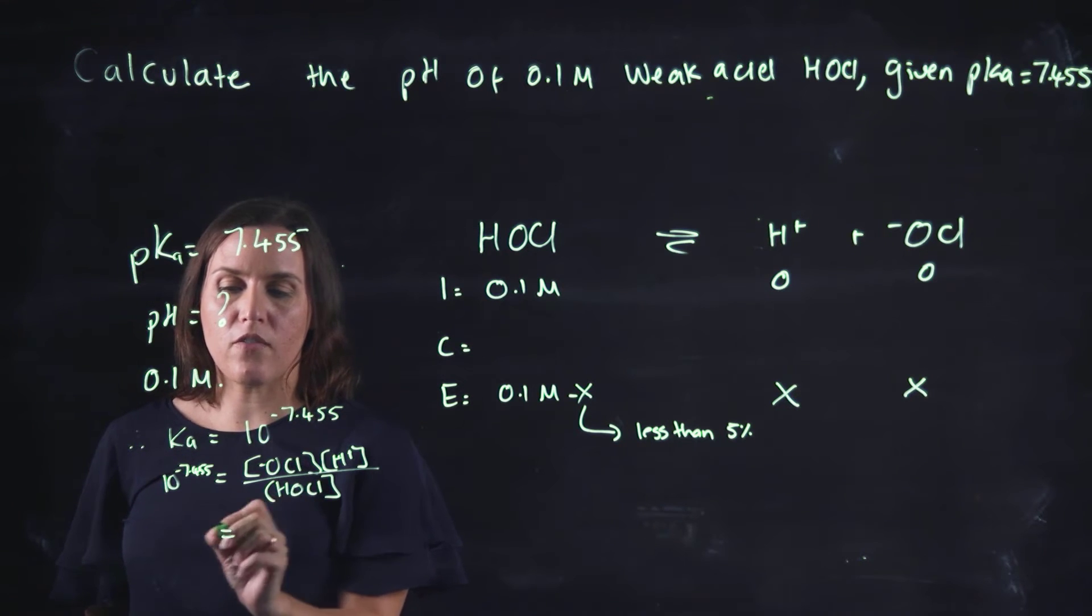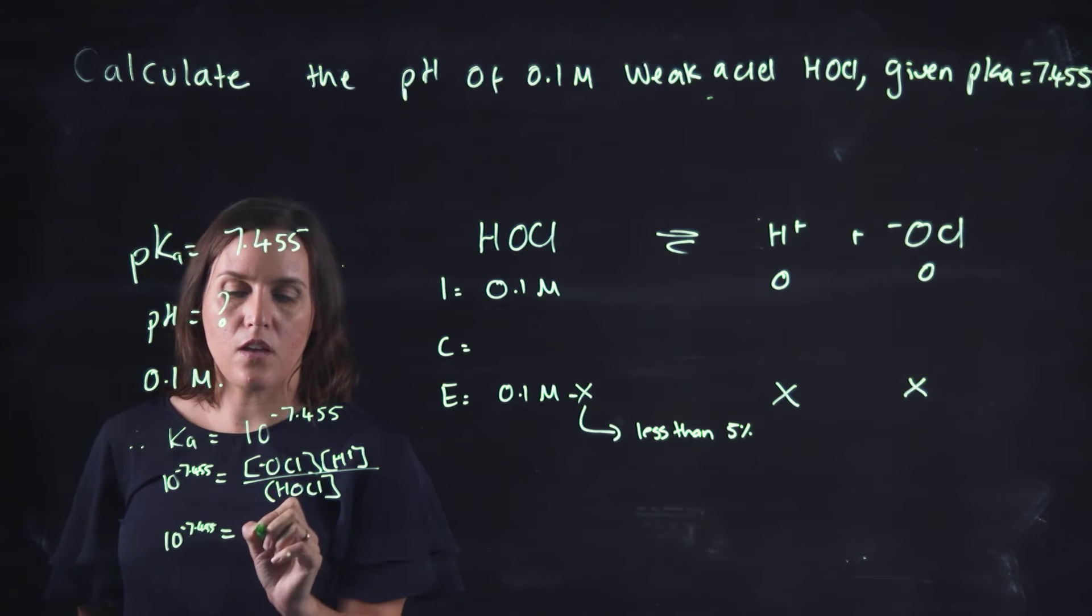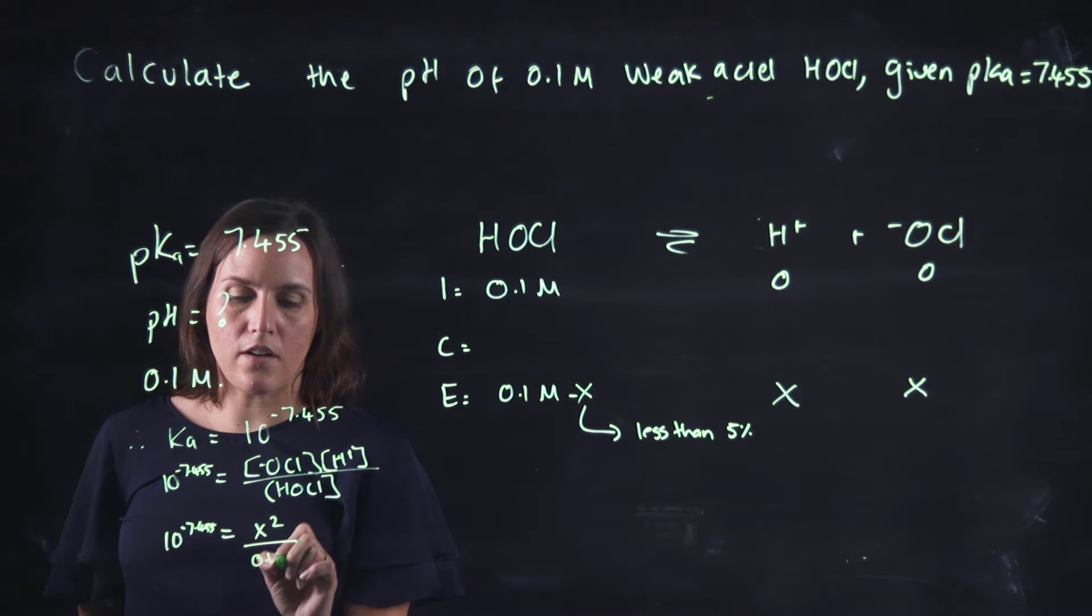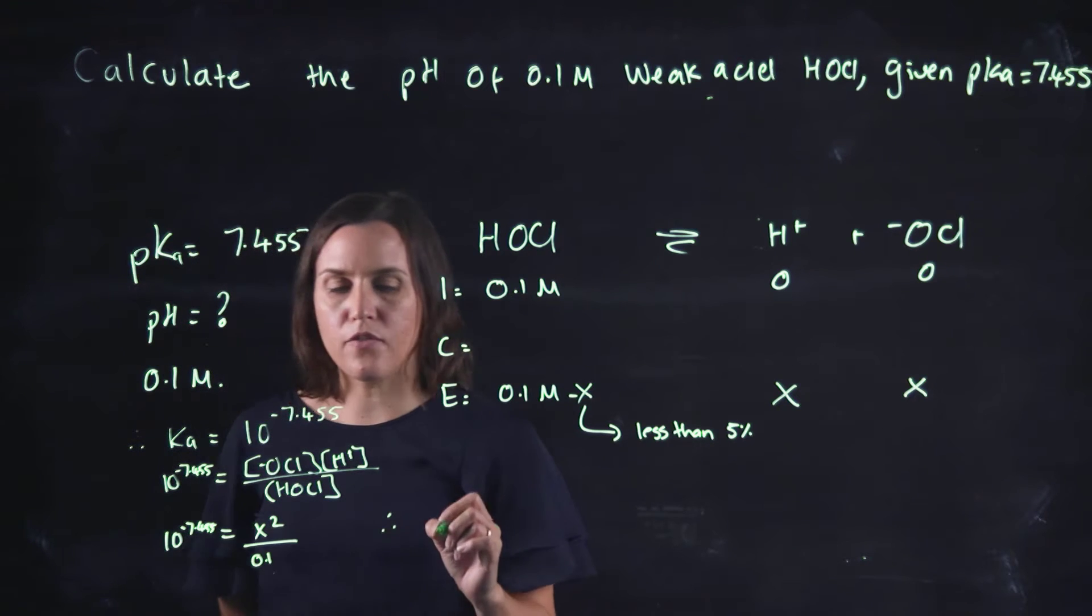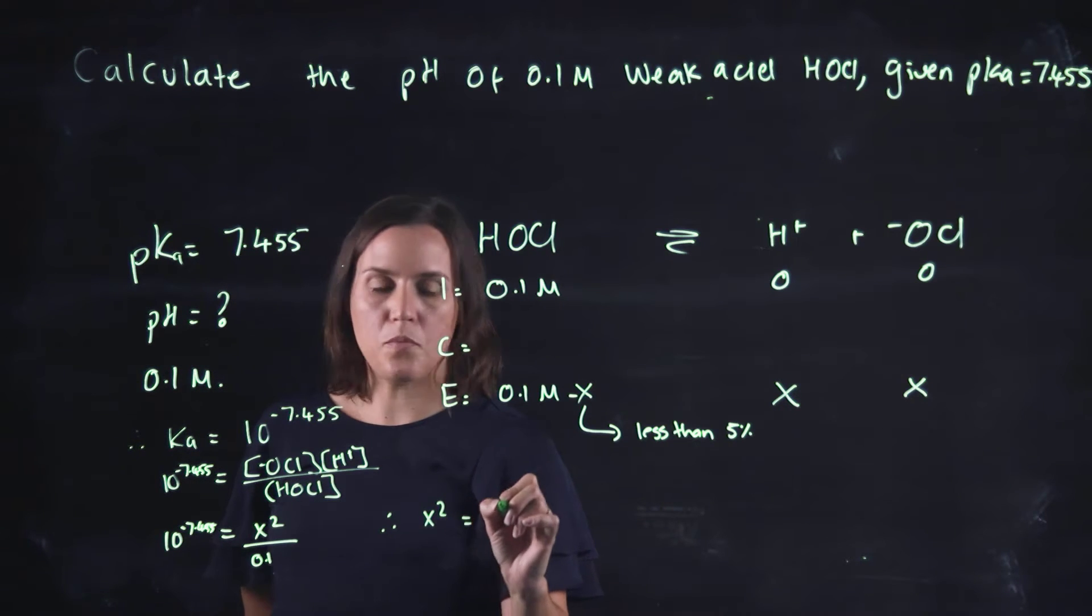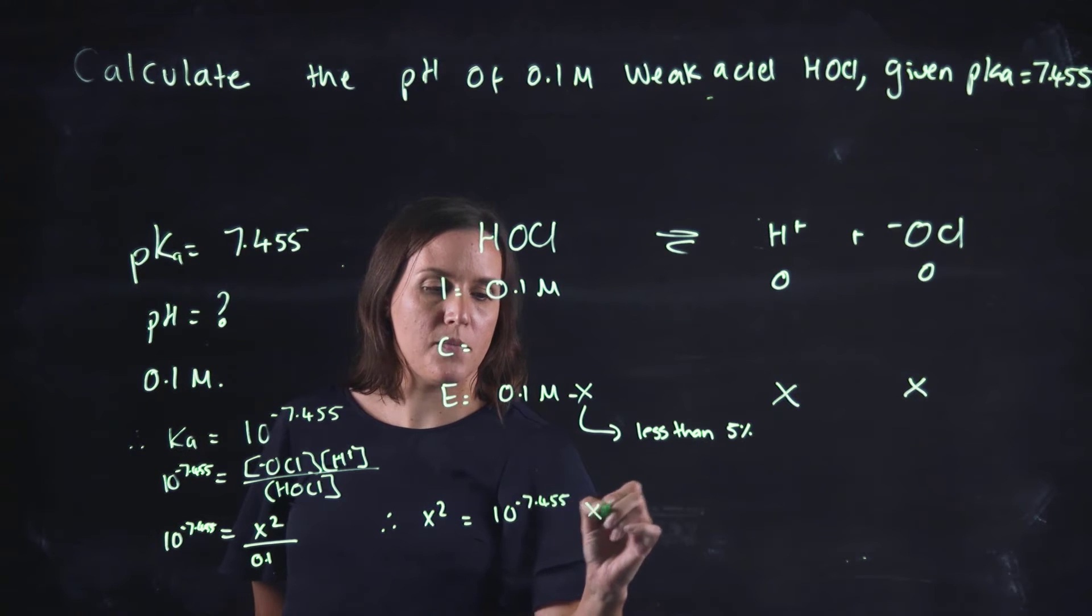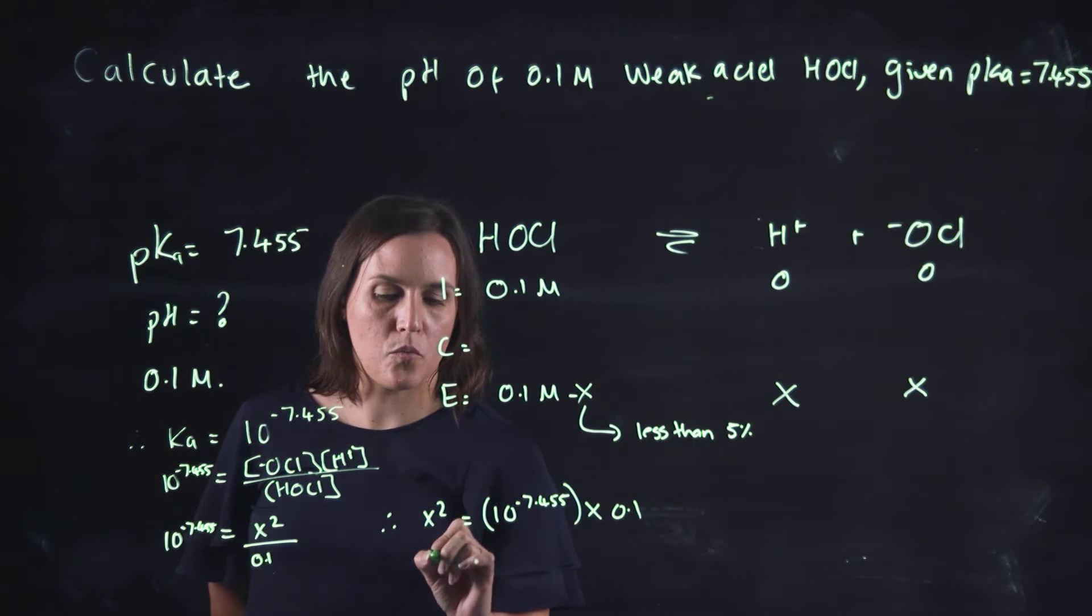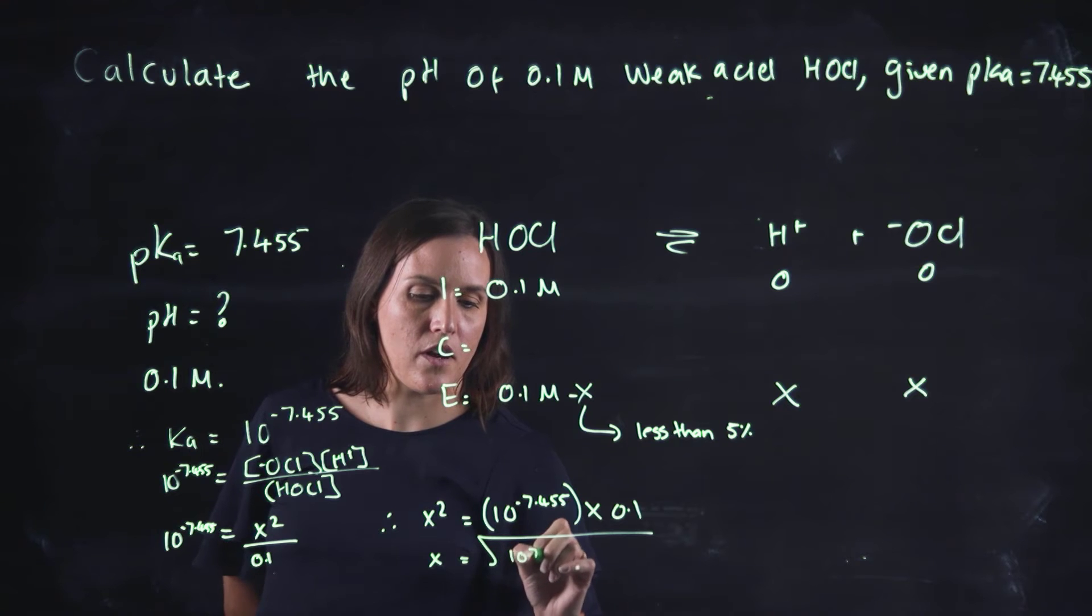But here we would rearrange this as 10 to the minus 7.455 equals x squared over 0.1 molar. So therefore calculating for x squared it would be 10 to the minus 7.455 times 0.1, and the square root of that then would be the value that we're after.